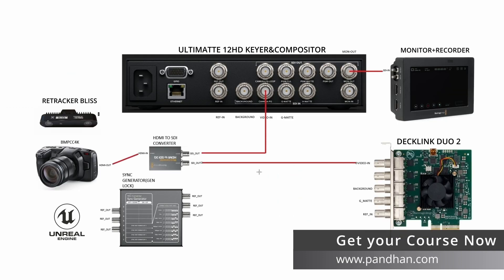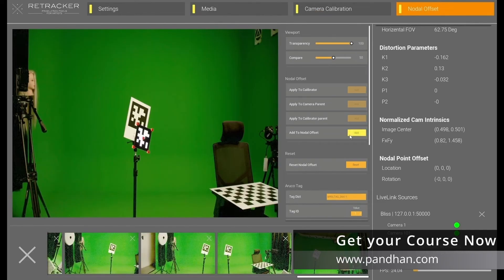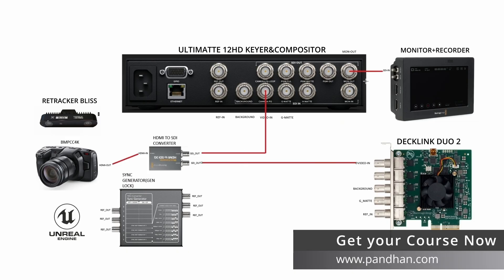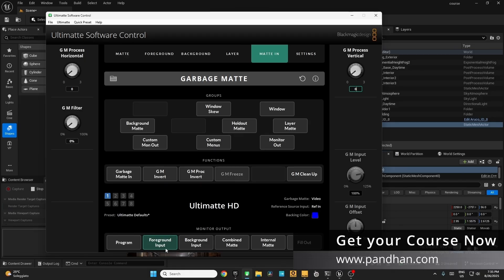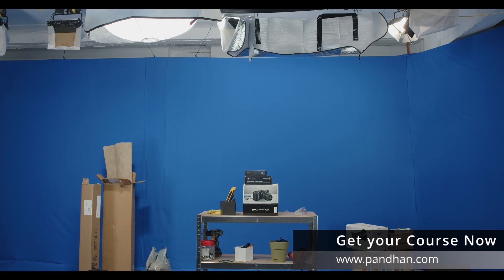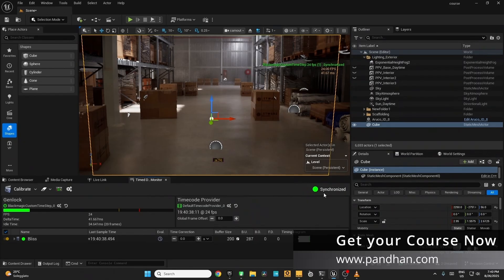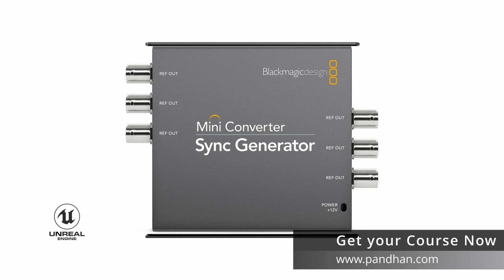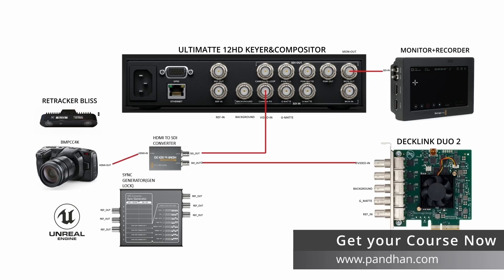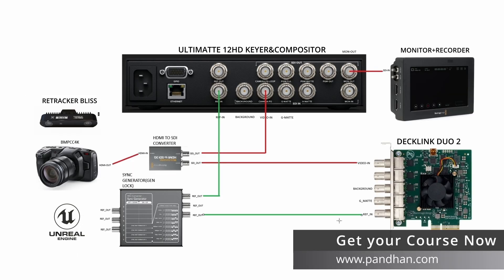We will get an input to Unreal Engine to do our camera calibration and nodal offset. Now we are getting our video signal to Ultimatte and to Unreal Engine. If you check the monitor, you can see we have a foreground input. We are shooting in 24 frames per second, so we have to keep that frame rate both in Ultimatte and Unreal Engine. To do that, we are using a sync generator to gen lock our signals so everything will be perfectly synced.